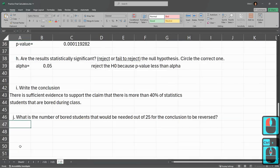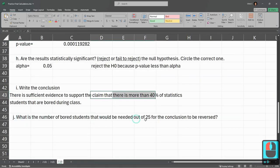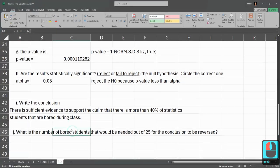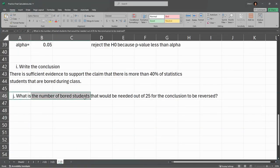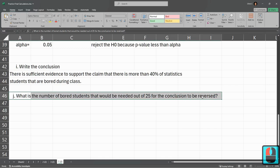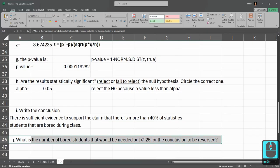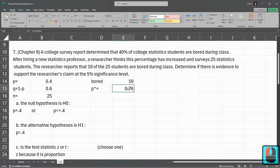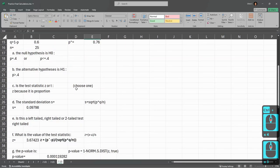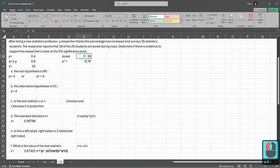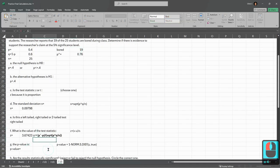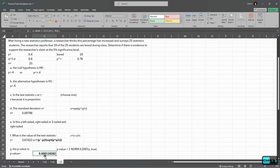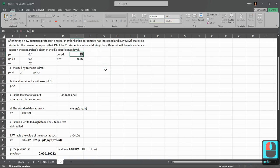I added a letter J on this question. What is the number of bored students that would be needed out of 25 for the conclusion to be reversed? So it's got to be less than the number we got because the number we got led us to 76% in the sample. So it's got to be less than 19. How much less is the question? And the way I've set this up, I believe if I edit the value right here, I can see the p-value change. So I'm going to make the p-value bold so it's easier to see.